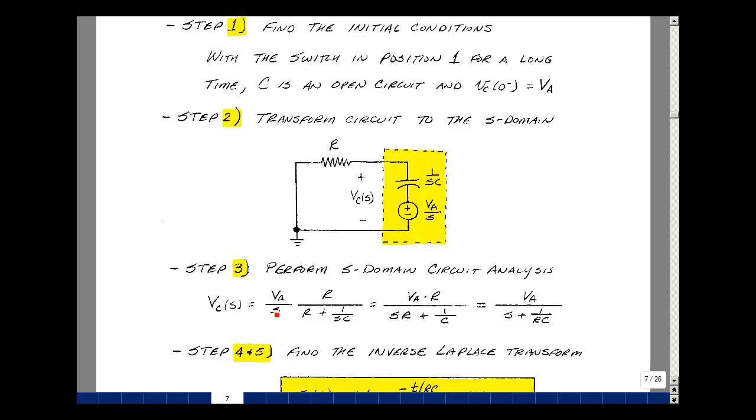Let's multiply through by this S, so I've got S times R plus 1 over C, and the numerator v sub a times R. Let me divide through by R, the numerator and denominator, so I just get v sub a, and then S plus 1 over RC.